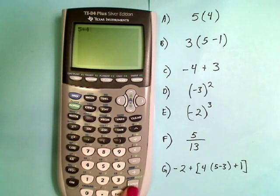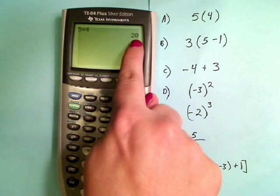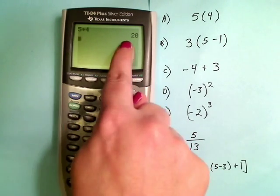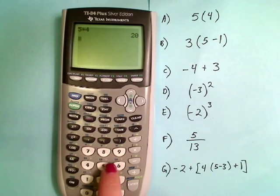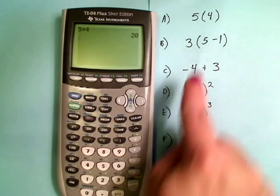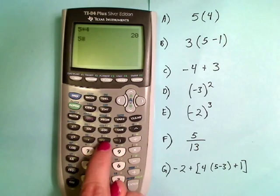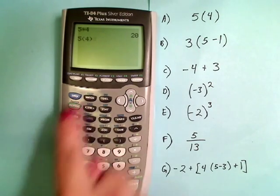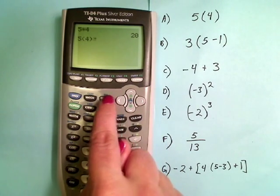So there are a couple of ways we can do multiplication on this calculator. We can do 5 and then the times button and then 4. Then press enter to get the result, there it is, 20. One thing that's really nice about these graphing calculators is that you can see both what you entered and your result at the same time.